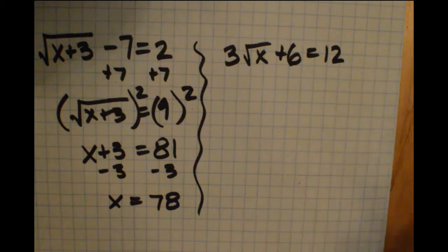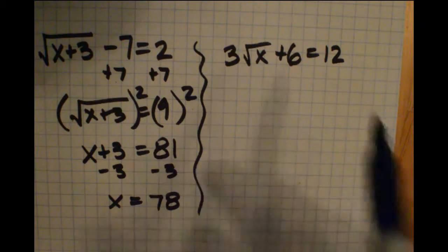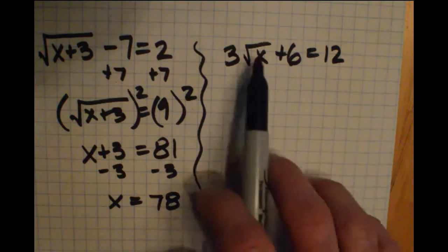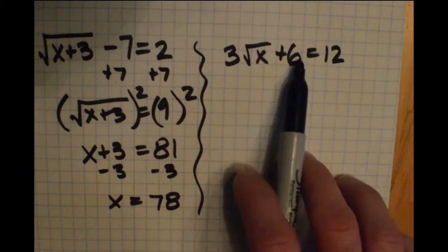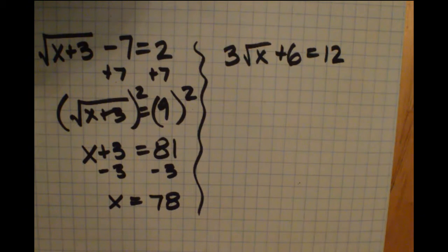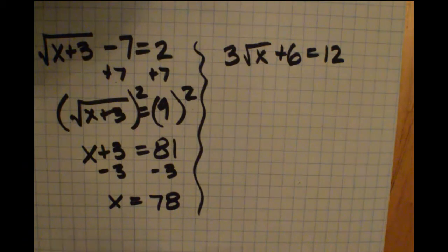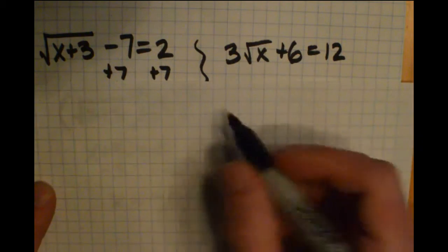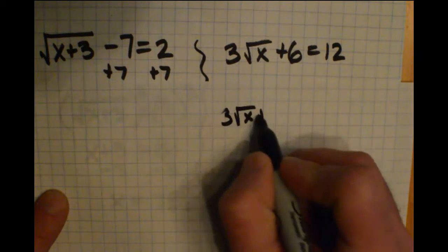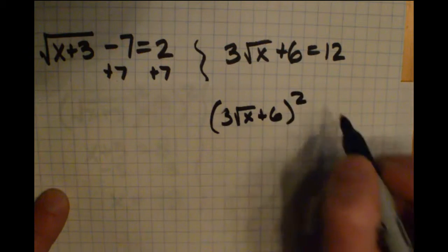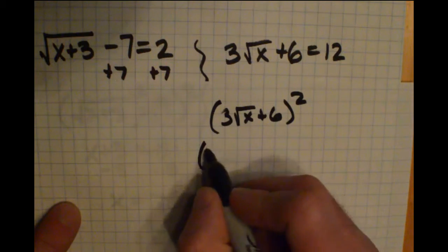So think about what we can do first here. The one thing that we can't do first here is square both sides. If we squared both sides, this is what would happen. So if I took this 3 radical x plus 6 side and I squared it, what would happen is I would have this binomial, 3 radical x plus 6,